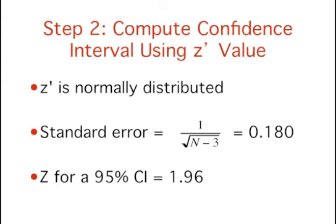We need to know the standard error. This can be calculated by dividing 1 by the square root of n-3. In this example, the standard error is 0.180.